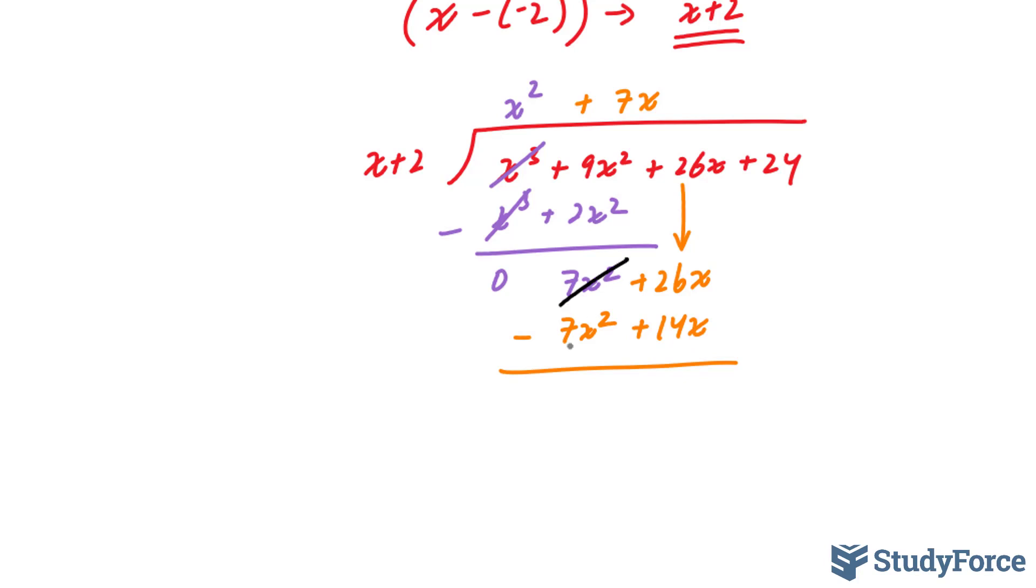Subtracting these, this goes to 0. And 26 minus 14 is 12x. I'll bring this term down, positive 24. 12x divided by x is equal to 12. 12 times x is 12x, and 12 times 2 is 24. The fact that we get no remainder means that this was, in fact, correct.